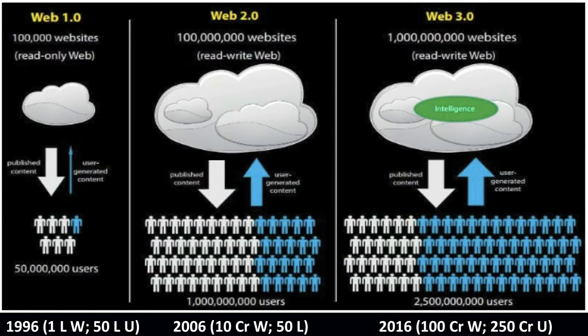In Web 1.0, there were about 100,000 websites and 5 million users. It was a unidirectional approach — people accessed e-resources and content but were not uploading anything. In 2006, when Web 2.0 arrived, websites increased to 5 million and users to 100 million. Users were not only accessing but also uploading resources, making content richer. In Web 3.0, websites increased to 3 billion and users to 2.5 billion, with much more interaction — more and more user-generated content, not just from experts.